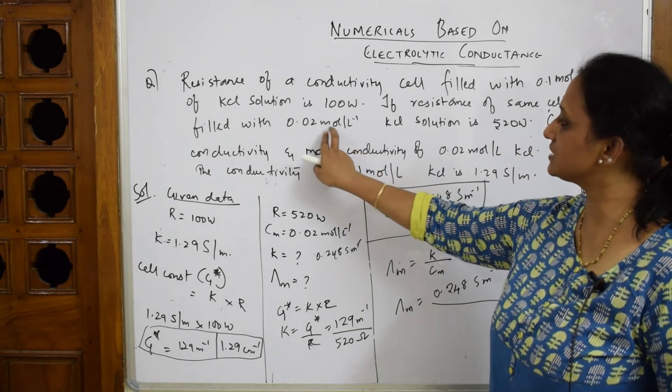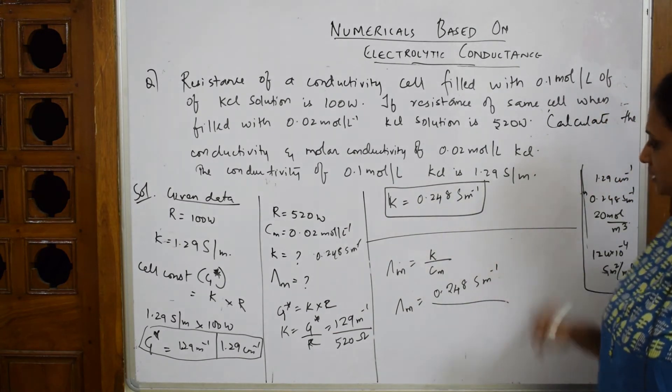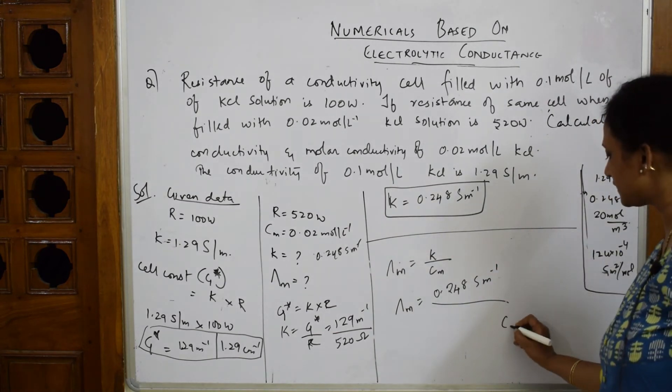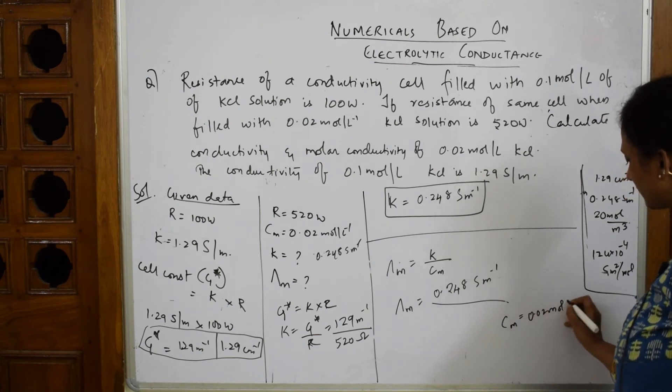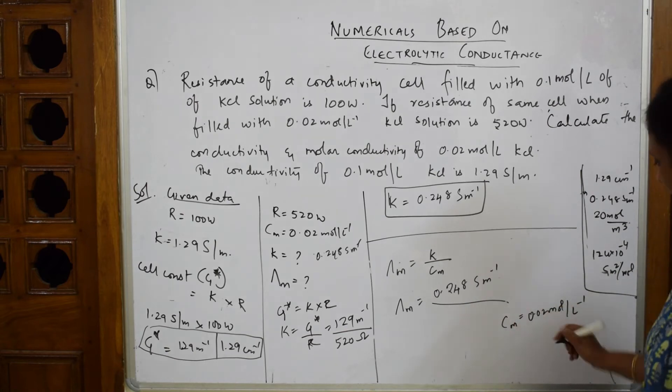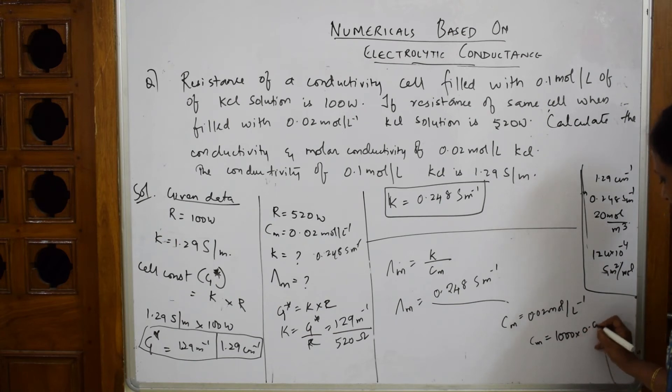The concentration is given in mole per liter. To convert Cₘ = 0.02 mol/L into mole per meter cubed, multiply by 1000.